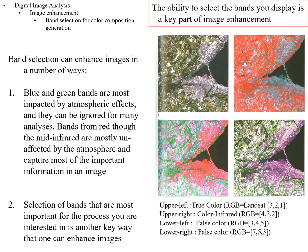We have covered spatial enhancement of images. Now we're going to talk about spectral enhancement of images. Just as I started spatial enhancement by looking at the most basic thing you can do — zooming in — with spectral enhancement, we're going to talk about the most basic thing you can do: band selection. Different types of features tend to get highlighted in different parts of the spectrum.